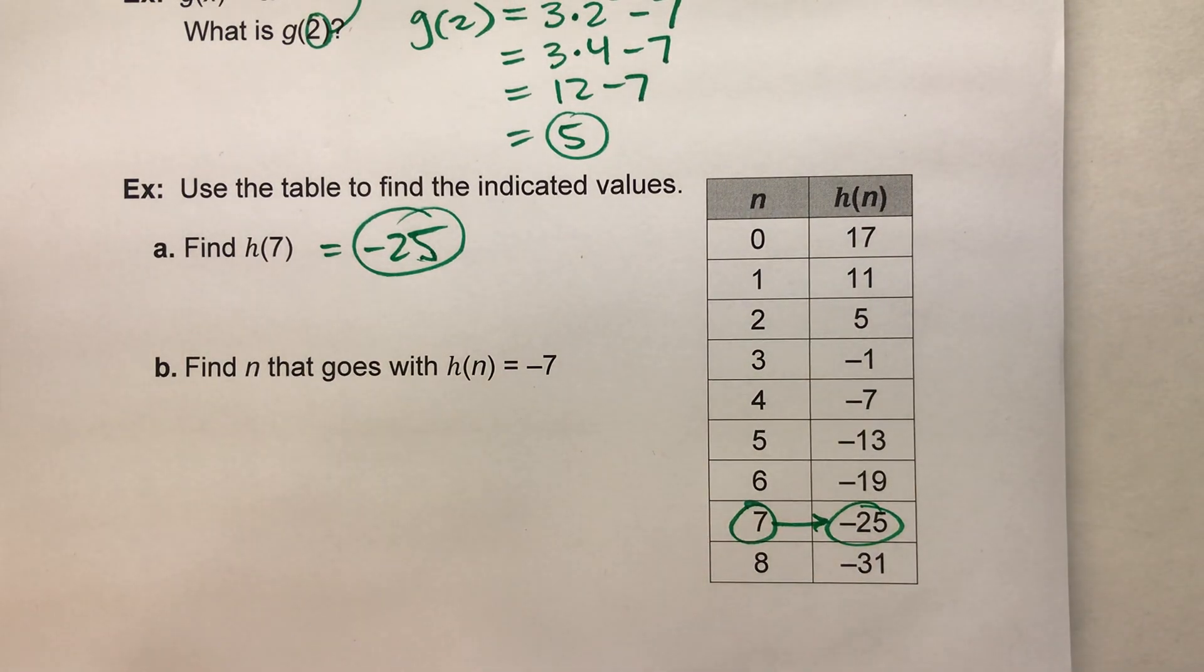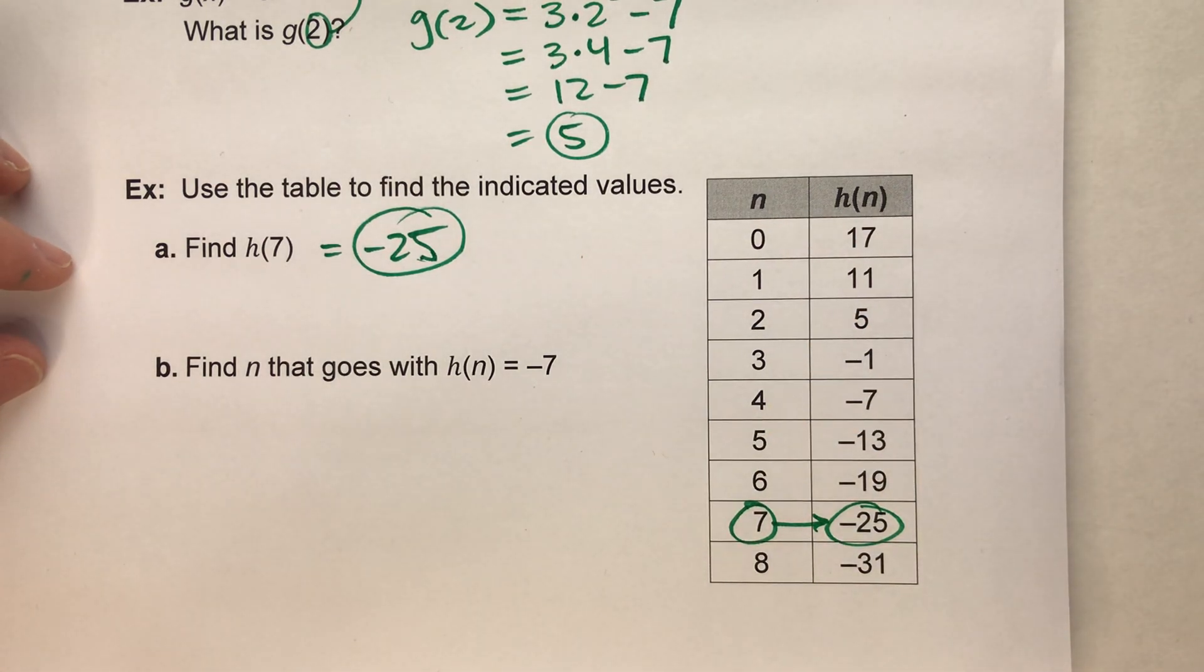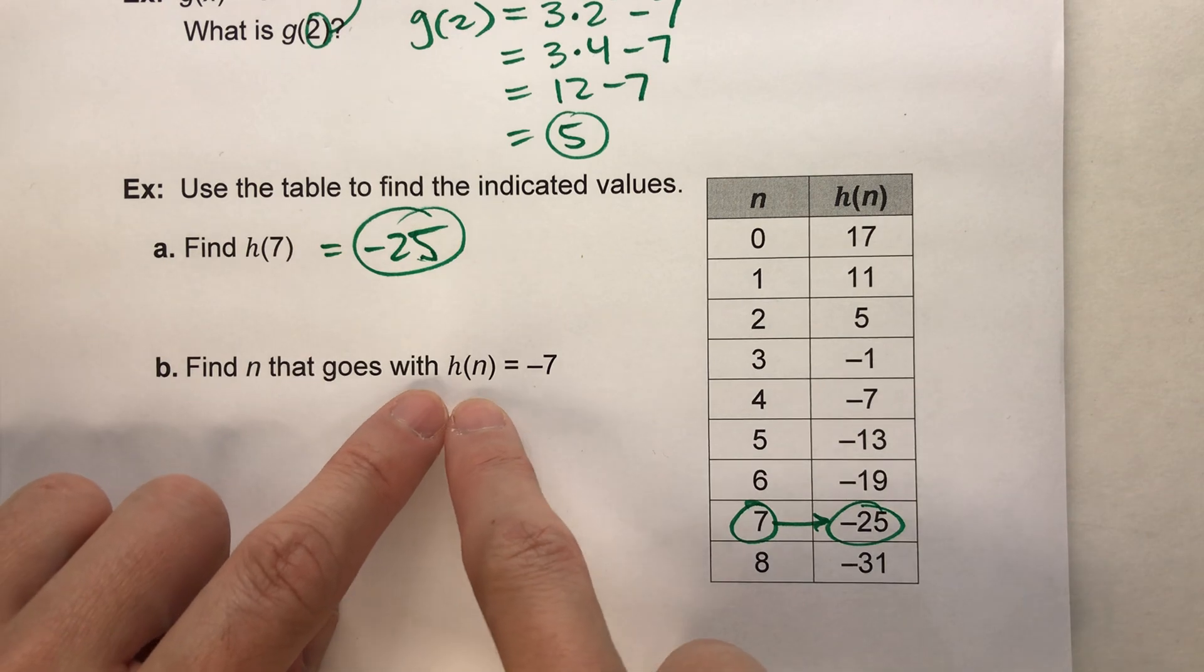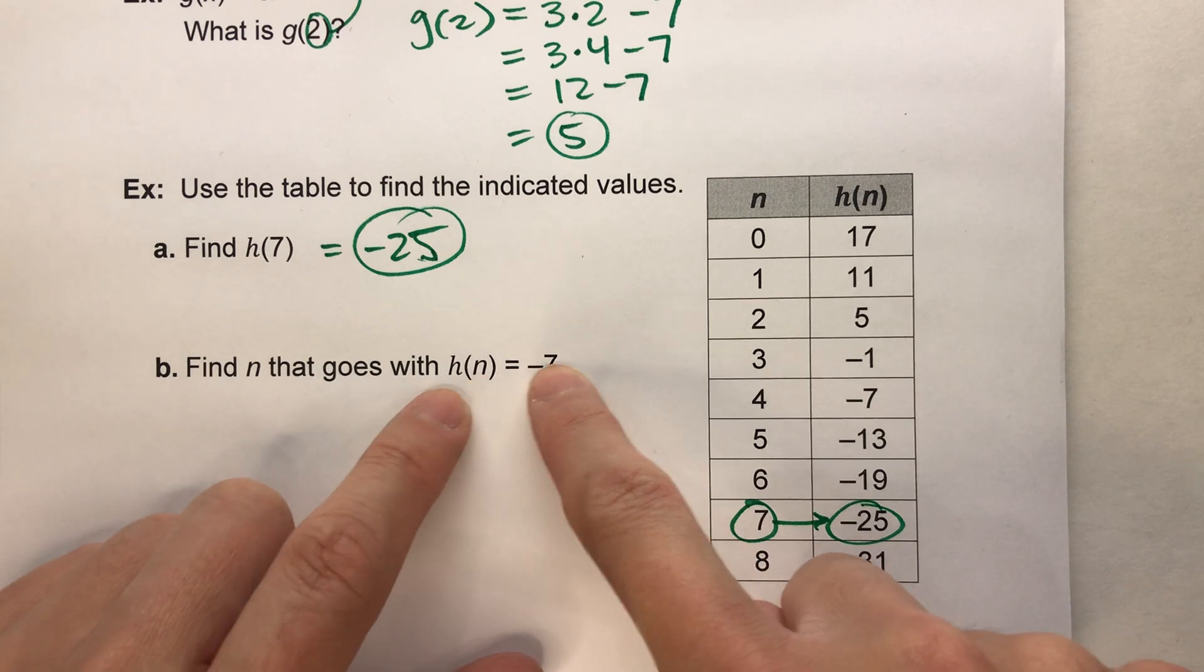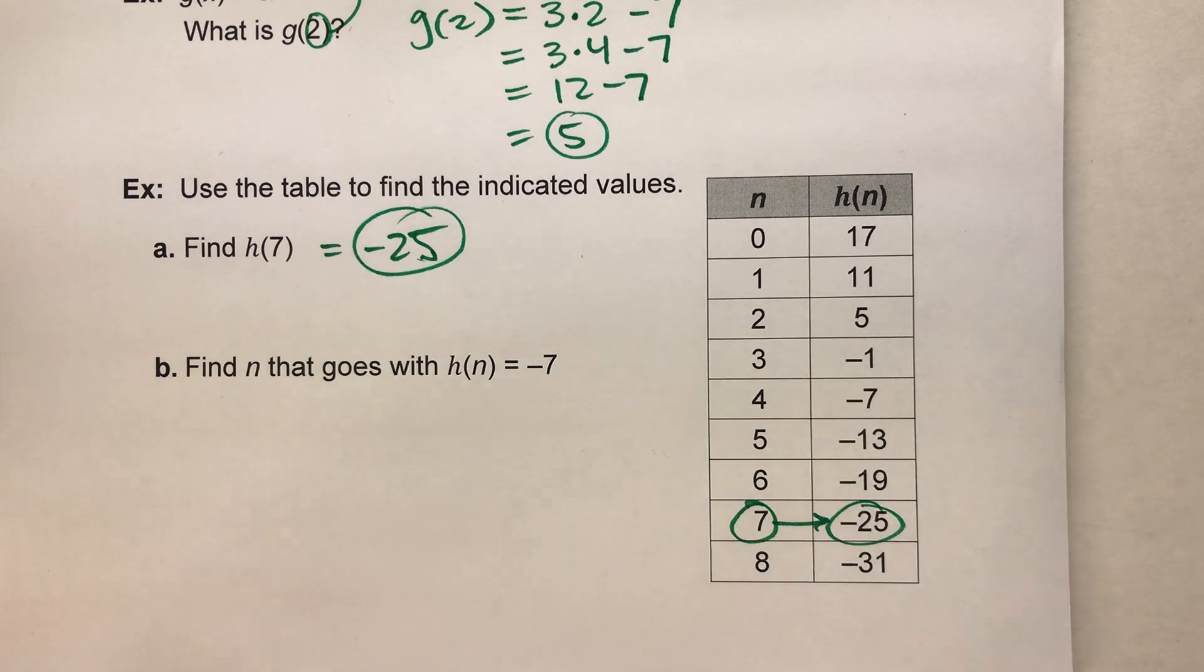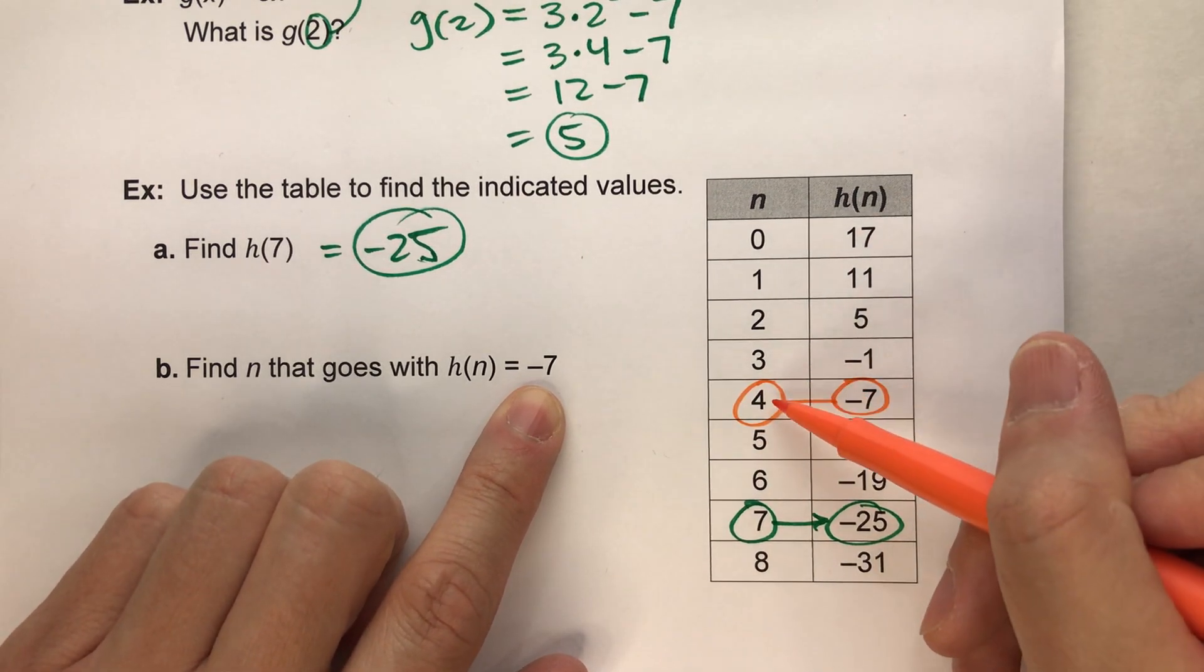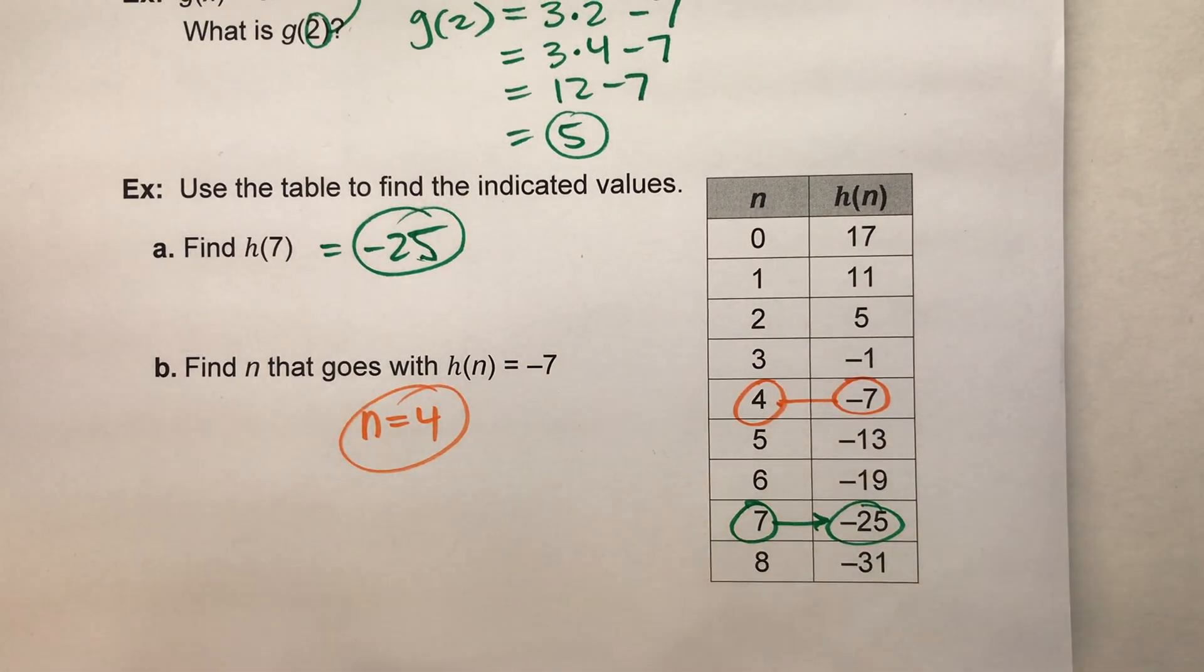So this time, because we didn't have the rule, we had a table, we could just look at the table and find the answer. Now look at this one, it's a little bit different, it's the opposite. Find n that goes with h of n is equal to negative 7. In other words, if the function equals negative 7, what n value did we use? Well, let's look at our table. h of n is at negative 7 here, when n is 4. So that means n must be 4.